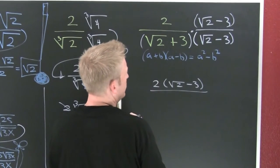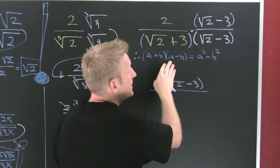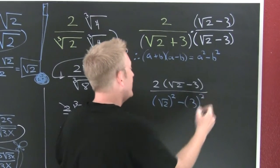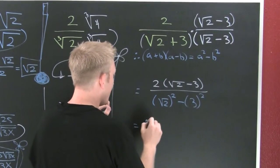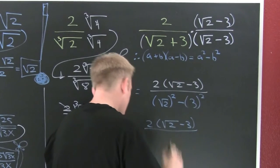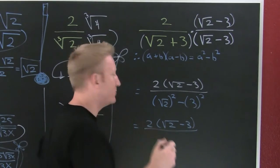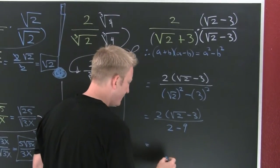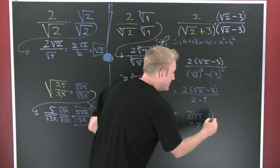Down there in that denominator, using the difference of squares pattern — for those who have seen the special products video — I have the square root of 2 squared minus 3 squared. I'm going to leave this in factored form. So in the numerator I'm going to have 2 times the square root of 2 minus 3. Root 2 squared means it times itself, and that's going to give you 2 — not root 2, it gives you 2. Minus 3 squared, which is 9. What's 2 minus 9? It's negative 7. So I'm going to have 2 times the square root of 2 minus 3, divided by negative 7.